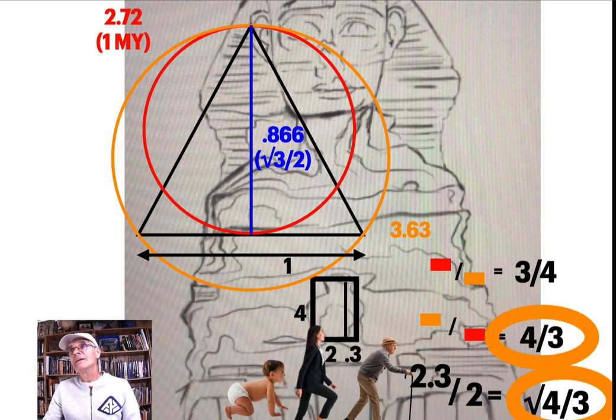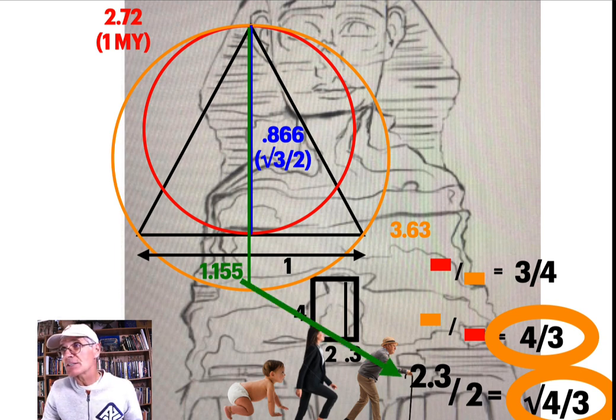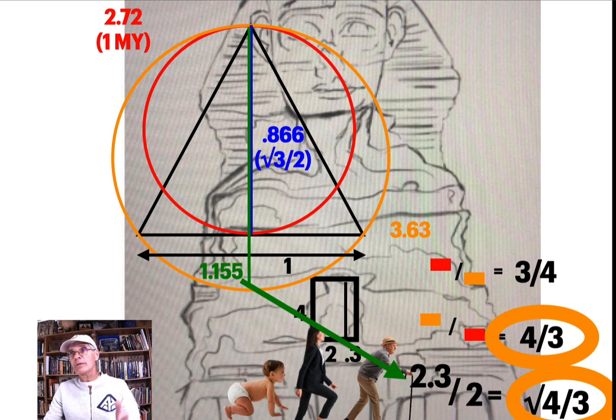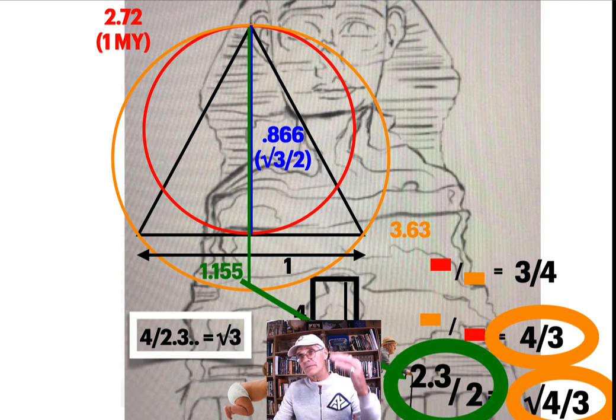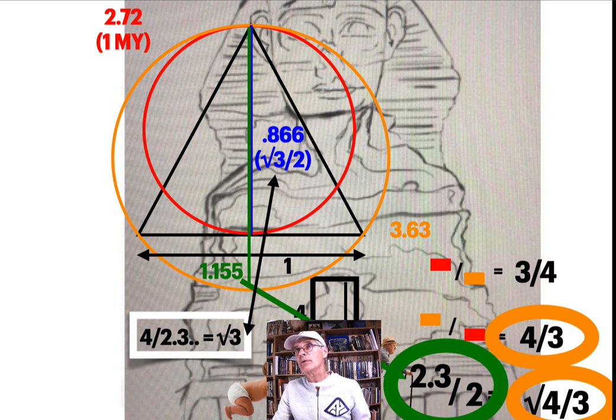Here's another one - what's the diameter of the gold circle? It's 1.155, which just happens to be the square root of four thirds. It's 2.3 and change divided by two. Now let's look at the keystone again - instead of dividing the width, let's divide the height four by 2.3, and you get the square root of three. There's another connection because we saw the square root of three is in the philosopher's stone.